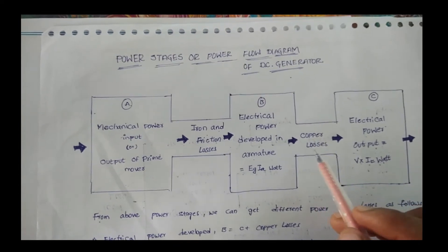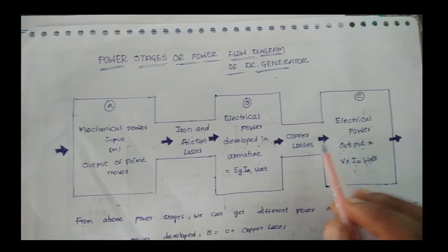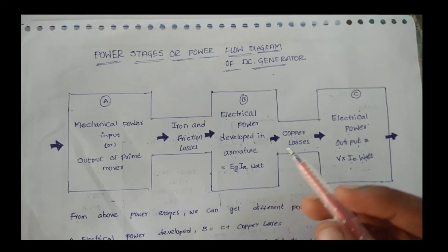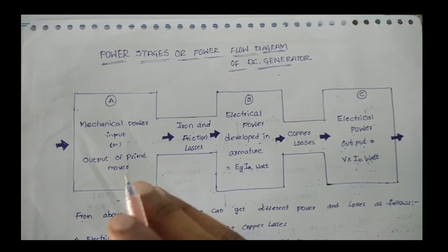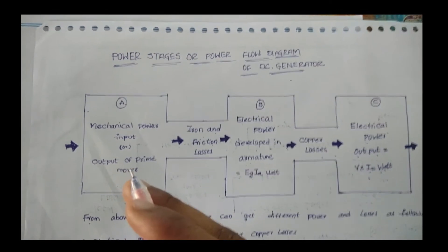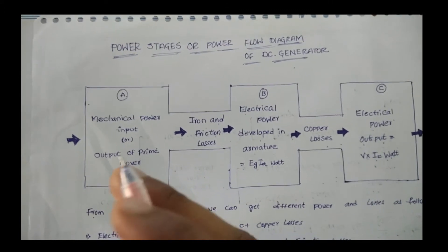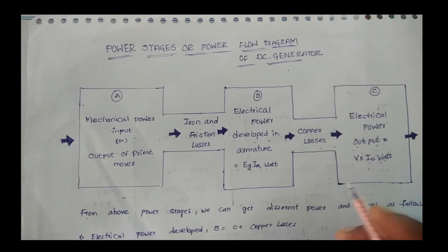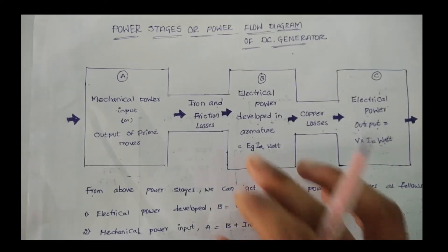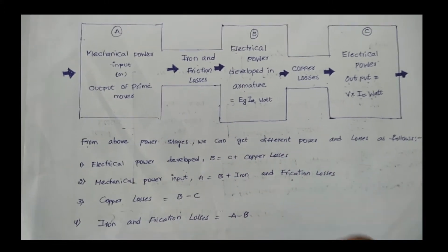When the armature power is developed, copper losses are also produced. Finally, the electrical power output — the power generated by the generator from the mechanical input — is equal to V multiplied by I, in watts. From this we can identify all the losses produced by the generator.